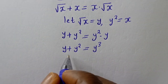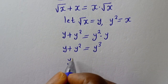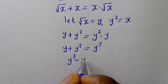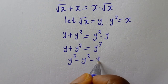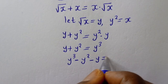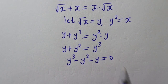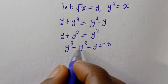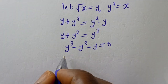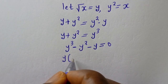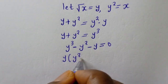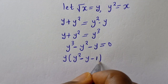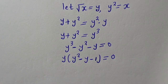Let's equate everything to zero. We have y cubed minus y squared minus y minus 1 equals 0. Wait — we can factor out y: y times bracket y squared minus y minus 1 equals 0.